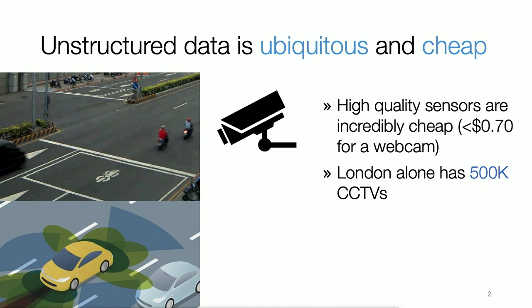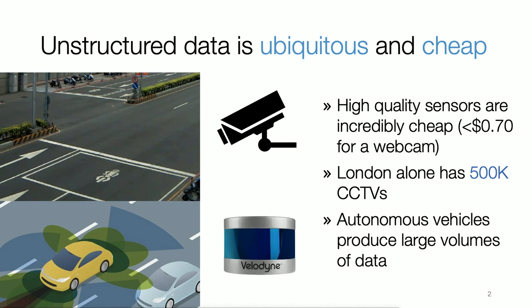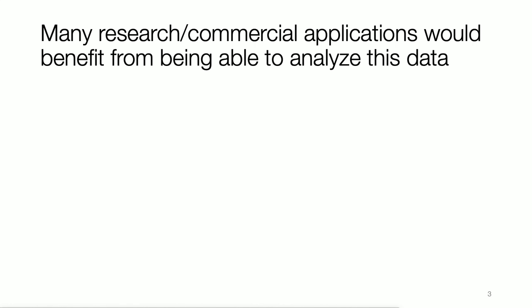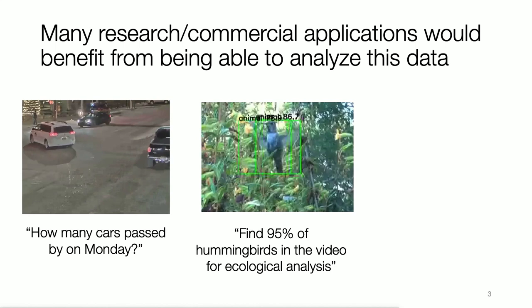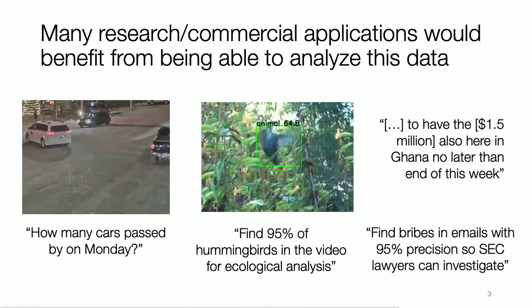Additionally, autonomous vehicles are becoming more and more prevalent and they contain a variety of sensors that also produce large amounts of data about the real world which we can then query. Many research and commercial applications would benefit from being able to analyze this data. For example, a traffic analyst can ask queries of the form: how many cars passed by this intersection on Monday?